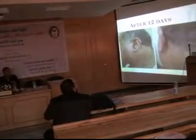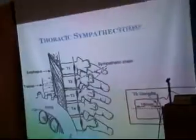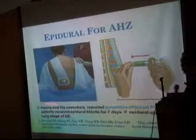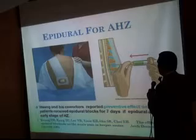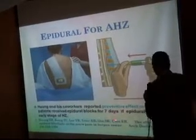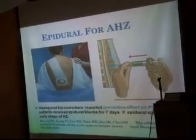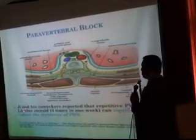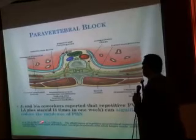After thirteen days, this is the same patient — notice after two stellate ganglion blocks in the acute phase there is no hearing loss, no facial palsy, and no post-herpetic neuralgia. For patients who received epidural block for seven days, if epidural is applied at an early stage, the outcome is favorable. Repetitive paravertebral block with local anesthetic and steroid — four times in one week — can significantly reduce the incidence of post-herpetic neuralgia.